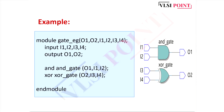In this example, you can see how to write the Verilog code in gate level modeling. In this figure, and gate and xor gates are there. For this circuit, you write the module keyword, then the module name, then specify all input and output ports. For the and gate, write: and and_gate o1, i1, i2. Similarly for xor gate: xor xor_gate o2, i3, i4, then endmodule.